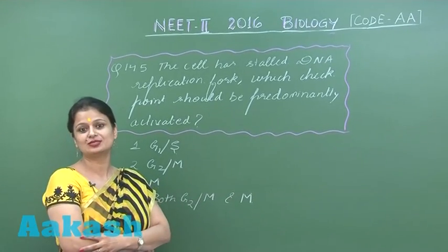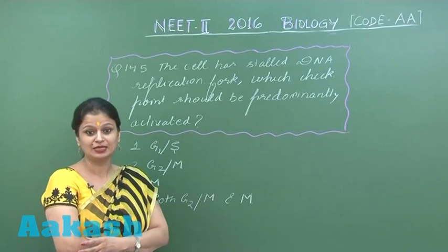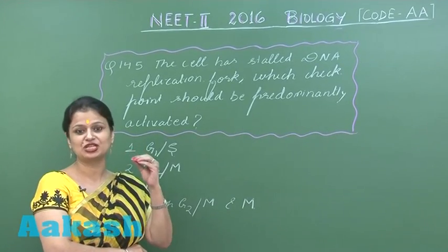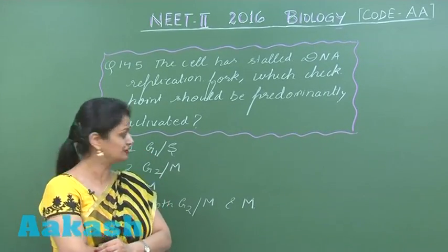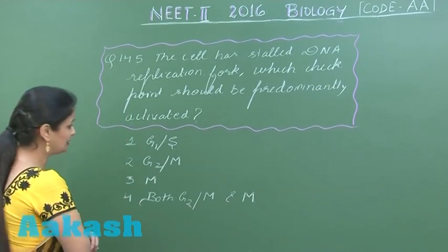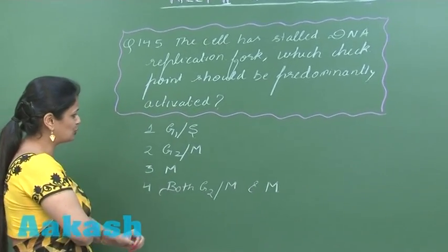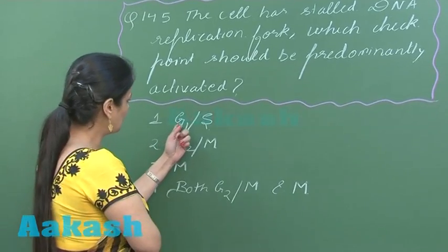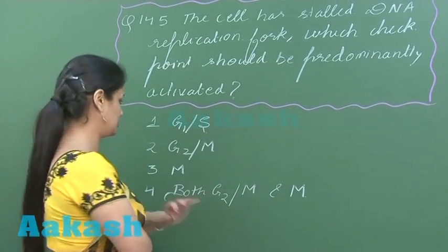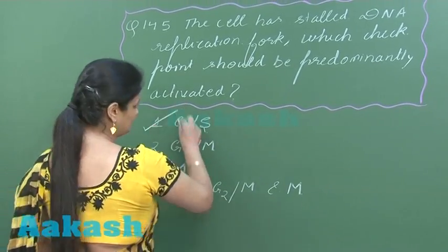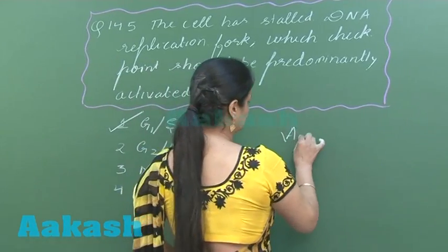If the G1 to S transition has been inhibited, which checkpoint is activated here? The checkpoint which is activated is one of the major ones: the G1 to S transition. So the right option for this question is answer 1.